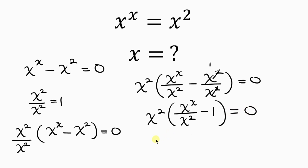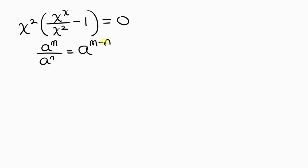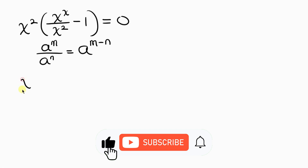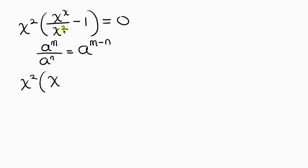Now notice that x² divided by x² is 1. Our next step is to apply the law of indices, which states that a^m over a^n equals a^(m−n). Applying this, the expression becomes x² times (x^(x−2) minus 1) equal to zero.